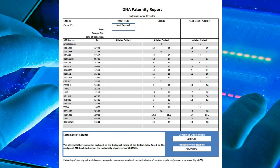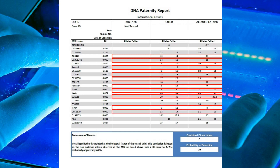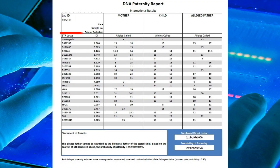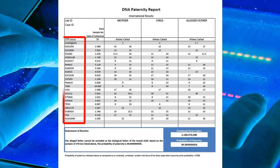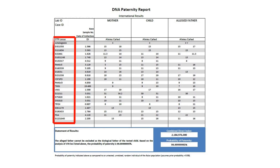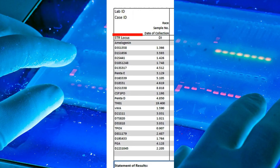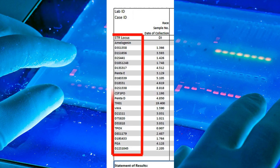The probability of paternity is the percentage likelihood that a man with the alleles of the alleged father is the biological parent of the child, as compared to an untested, unrelated man of the same race. For a long time, the industry standard for establishing paternity relied on examining 16 STR loci. However, our laboratories go above and beyond by testing 22 STR loci, ensuring unparalleled accuracy. Our tests are designed to meet both CODIS and European testing standards, guaranteeing the highest level of discrimination among all autosomal STR kits available.